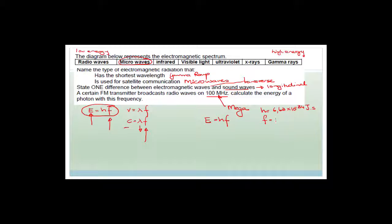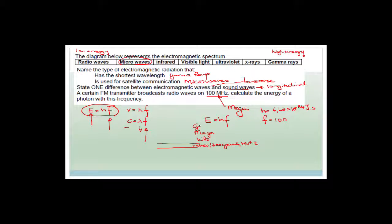The frequency is 100 megahertz, so you have to convert that. Let me remind you how this works. The SI unit could be meters, liters, grams, or hertz. Going upward: kilo is 10³, mega is 10⁶, giga is 10⁹, and tera is 10¹². Going downward: milli, micro, nano. So 100 megahertz is 100 × 10⁶ Hz. You must use SI units in this equation.